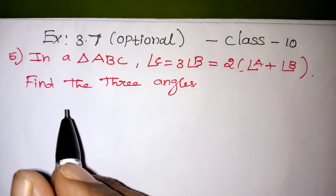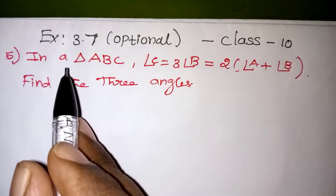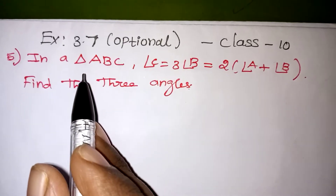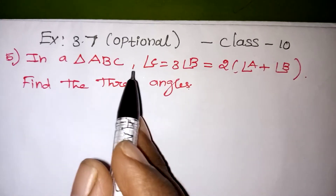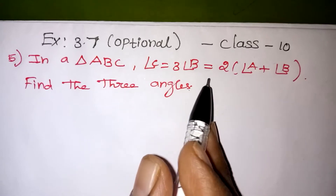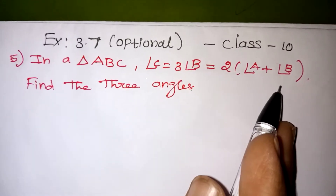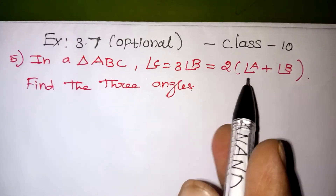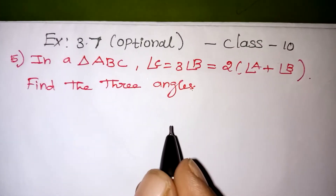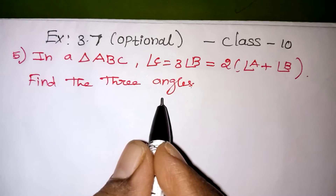Hi students, in this video we are going to learn question number 5 from exercise number 3.7 optional. Our question is: in a triangle ABC, angle C is equal to 3 times angle B, which is equal to twice of angle A plus angle B. Find the 3 angles.